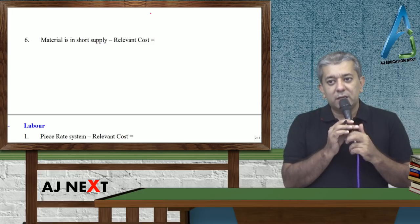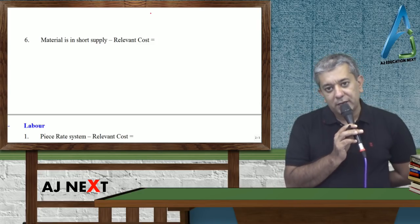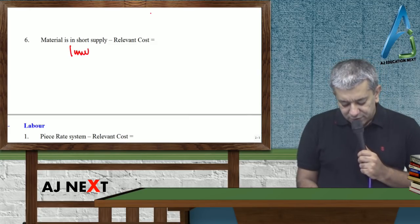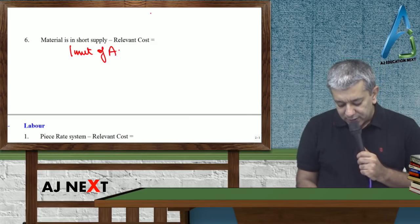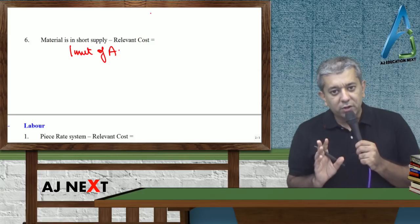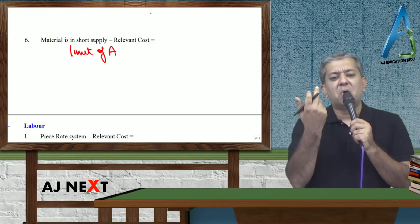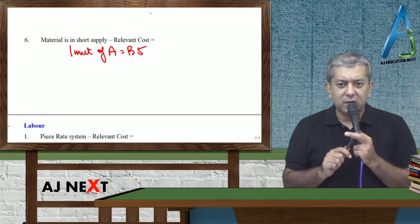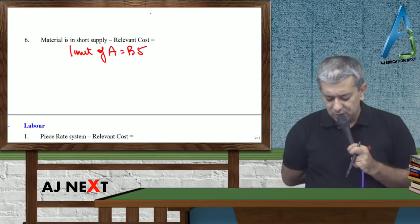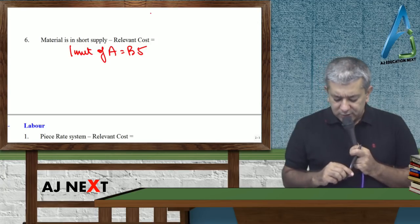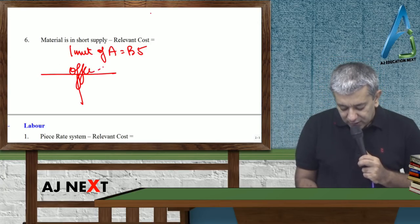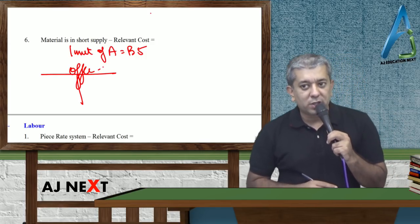Sixth, material is in short supply. It will happen like this suppose - you have one unit of A lying with you. This one unit of A you have. It's not available in the market anymore. When you bought it, you bought it for 5 rupees. Can't get more now. Now if you can't get more, sir, an offer has come. For the offer I need this raw material.